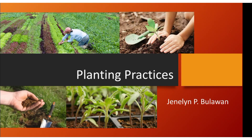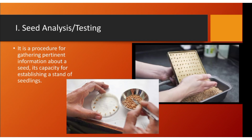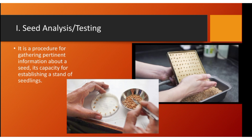Good day. We are now on planting practices in crop production. First, we need to have a seed analysis or seed testing. In seed testing, we need to know if the seeds are viable or if they will germinate when sown. It is a procedure for gathering pertinent information about a seed and its capacity for establishing a stand of seedlings — without waste of time, money, and effort. You need to test the percentage of viability of your seeds before planting on two hectares of land.